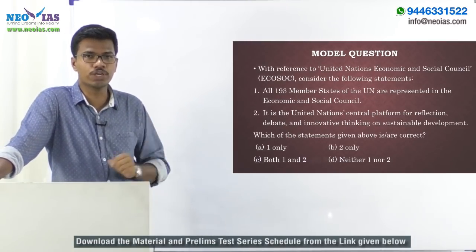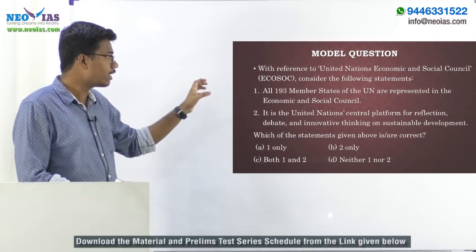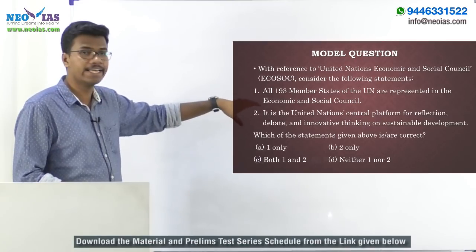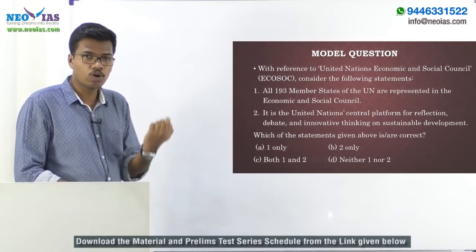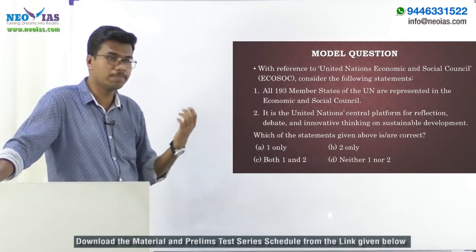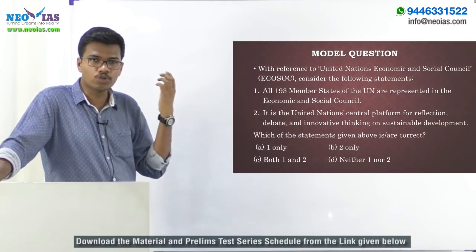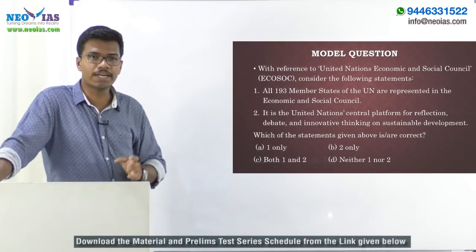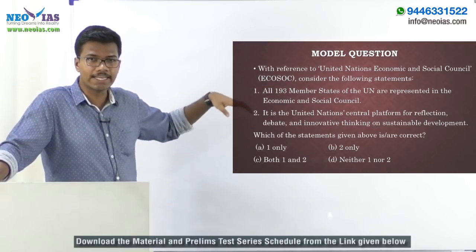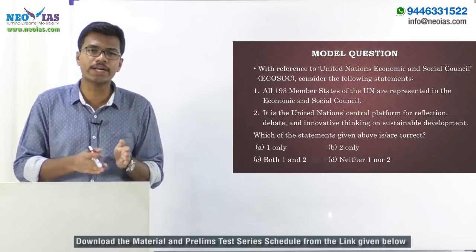Now let us look at a model question on the principal organs of the UN. With reference to ECOSOC, consider the following statements. Statement one: all 193 UN members are represented in ECOSOC. This is wrong — ECOSOC has only 54 members elected by the General Assembly. Statement two: ECOSOC is the UN's central platform for reflection, debate, and innovative thinking on sustainable development. This is true, as discussions and coordination on sustainable development is a key agenda of ECOSOC. The answer is option B — statement two only.